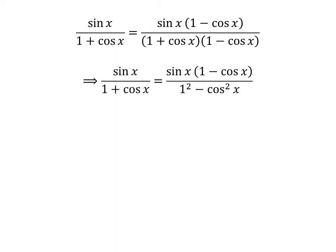The denominator of the right hand side of the above equation is in the form of a plus b times a minus b. Since a plus b times a minus b equals square of a minus square of b, so sine of x upon 1 plus cosine of x equals sine of x times 1 minus cosine of x, upon square of 1 minus square of cosine of x.